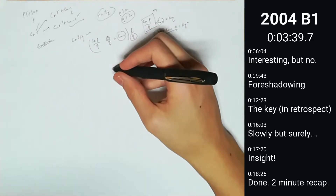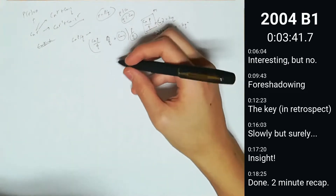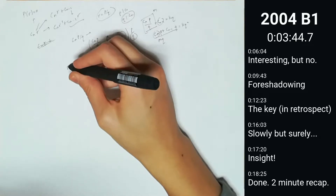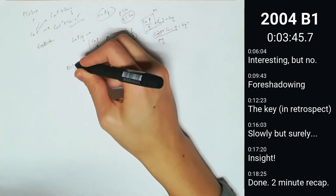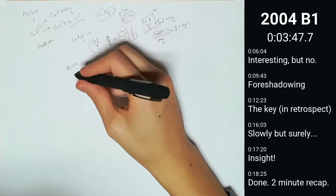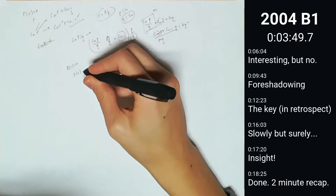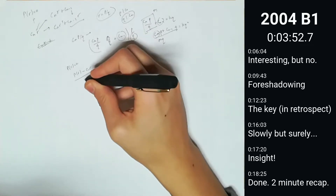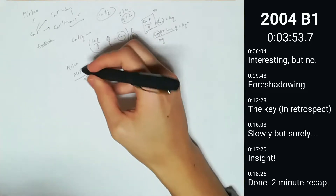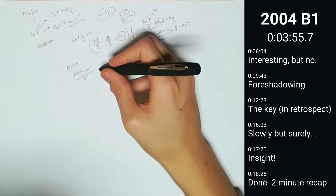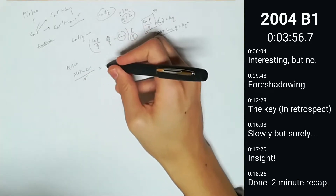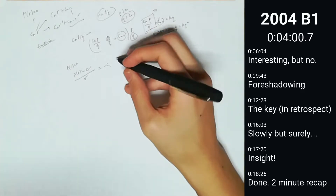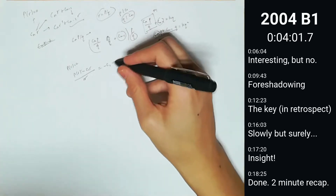The last number is just p of r, which is 0. The second-to-last number is going to be p of r minus c_1 r over r, which is just going to be negative c_1. So that's clearly an integer.